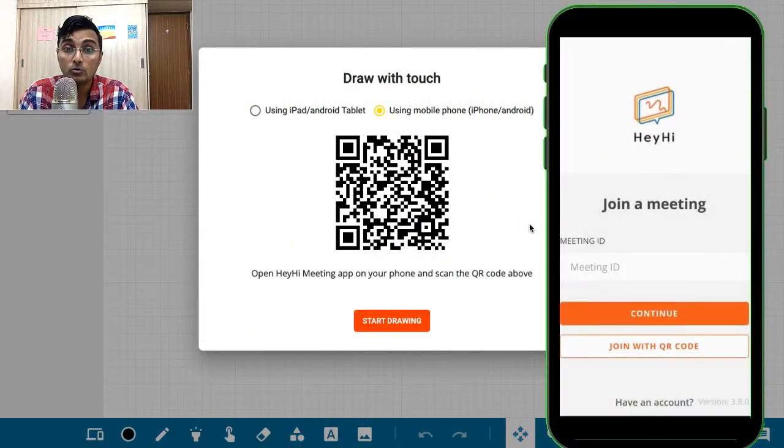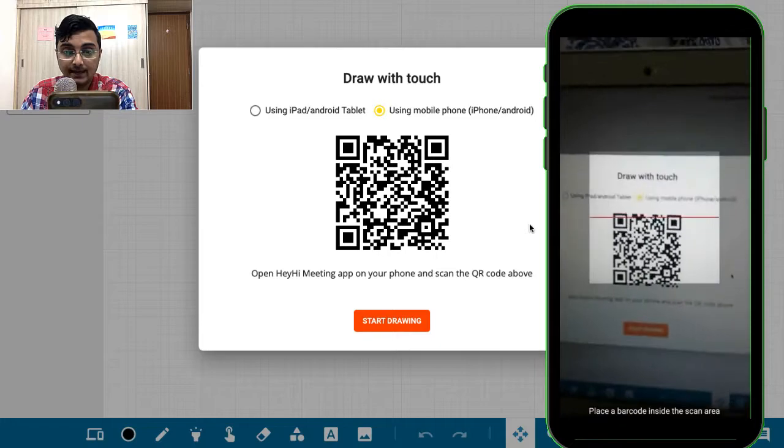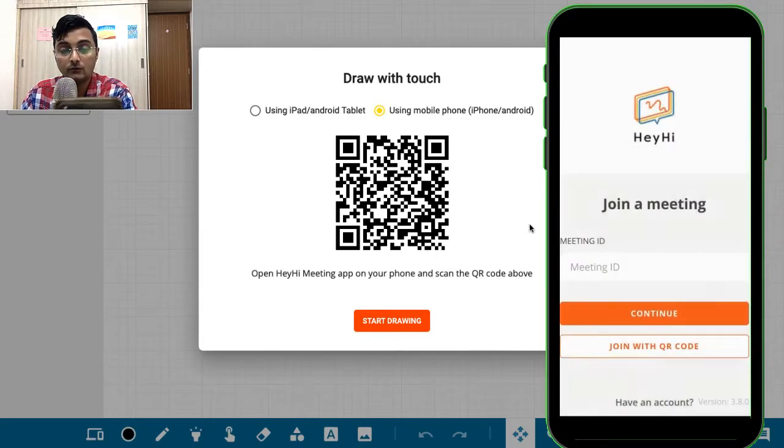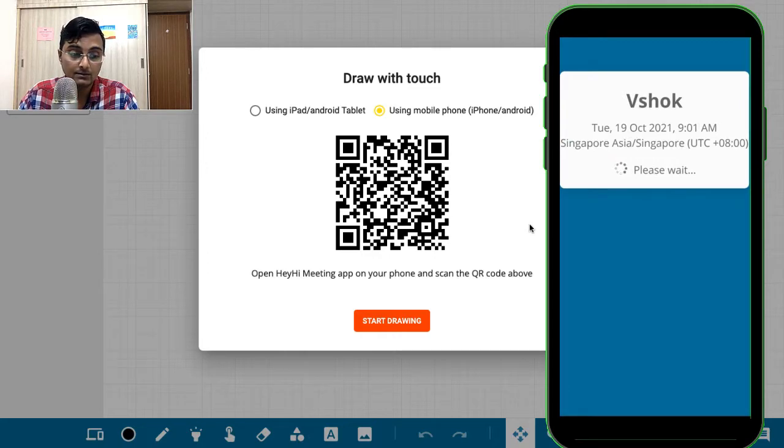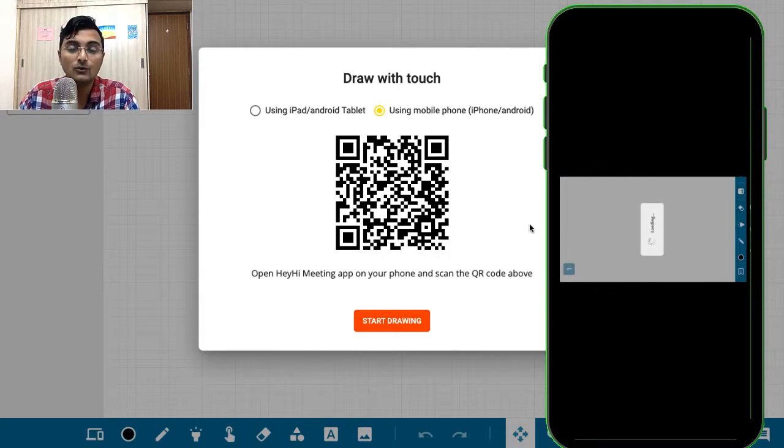Now open up your HeyHi app on your mobile phone and you'll find a join with QR code option. Click on it and scan your QR code with your mobile phone. It's pretty simple. So that way your mobile phone and your laptop are now connected.